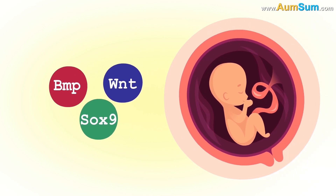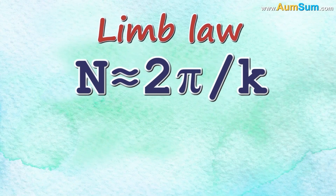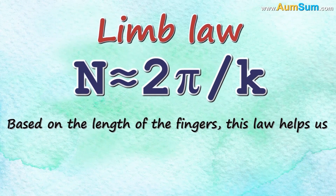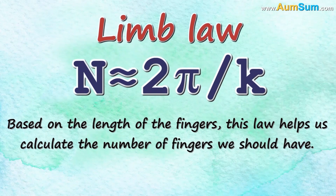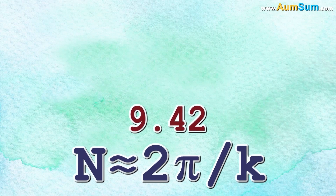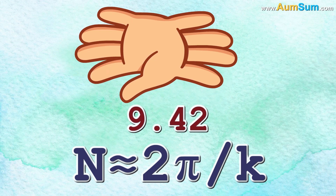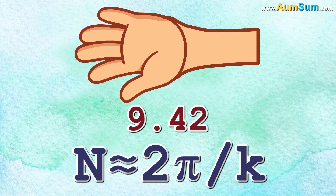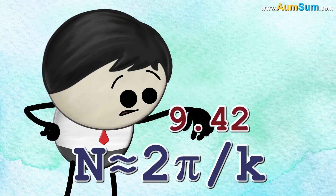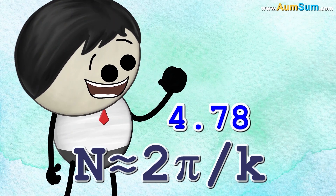Since in our embryonic state, they mark out spaces specifically for these five fingers. Another theory is related to the limb law. Based on the length of the fingers, this law helps us calculate the number of fingers we should have. Limb's law, using its mathematical model, comes up with the answer 9.42 fingers per hand. But we need fingers only on one side of the palm as the other side is connected to an arm. Hence, the final answer comes out to be 4.78 — that is, five fingers per hand.